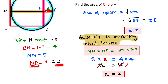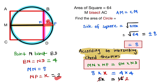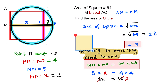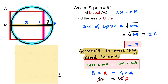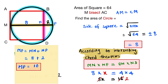The length of NP is equal to 2. Now the total length of MP is MN plus NP: 8 plus 2 equals 10. So MP equals 10.